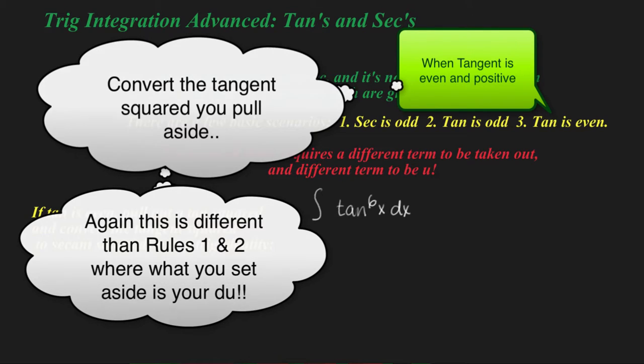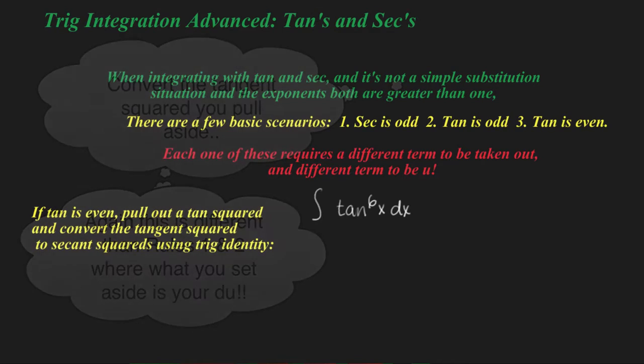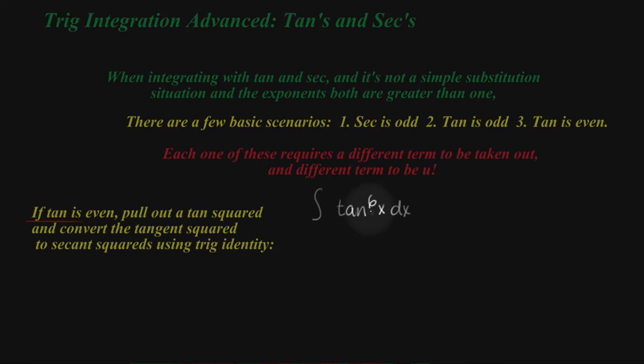So let's look at this example here. This example here, we are going to have an even tangent. So what we do is we've got to, like this says over here, pull out a tangent squared.